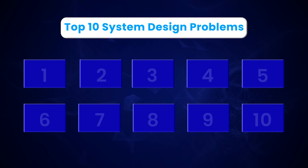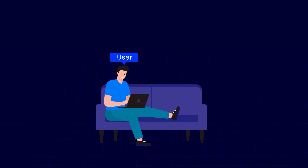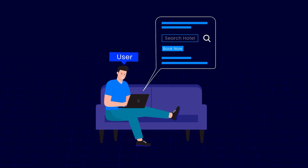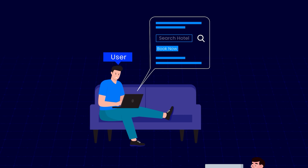At number 10, we have the design of a hotel booking system like Airbnb. There are many different functional requirements of a hotel booking system. If you look closely at the user journey, you will find that at minimum, a user should be able to search for a hotel and then book it.